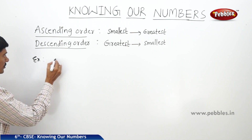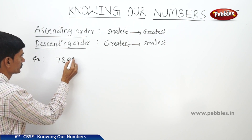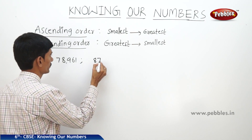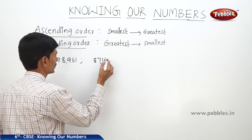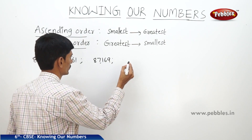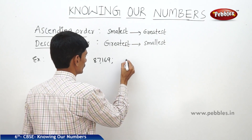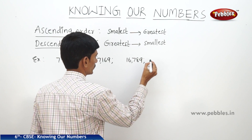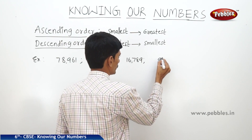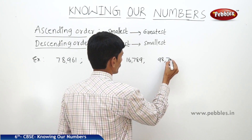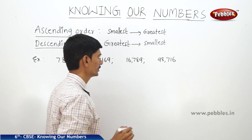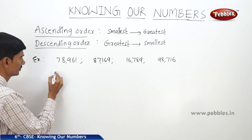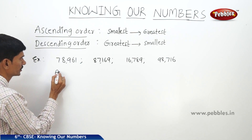For example, the numbers given are 78,961, 87,169, 16,789, and 98,716. We have to arrange these numbers in ascending order and in descending order. So first let us arrange the numbers in ascending order.